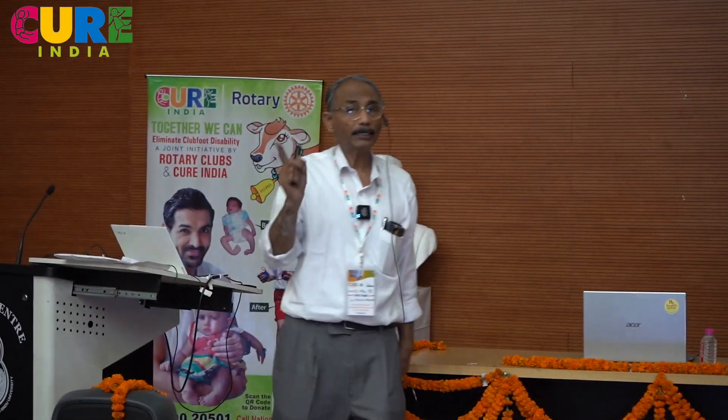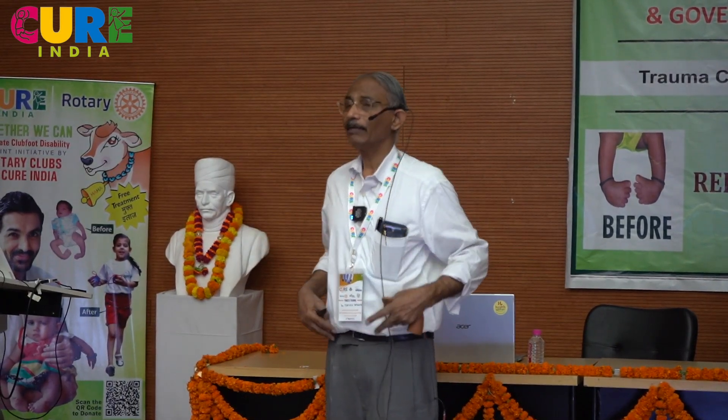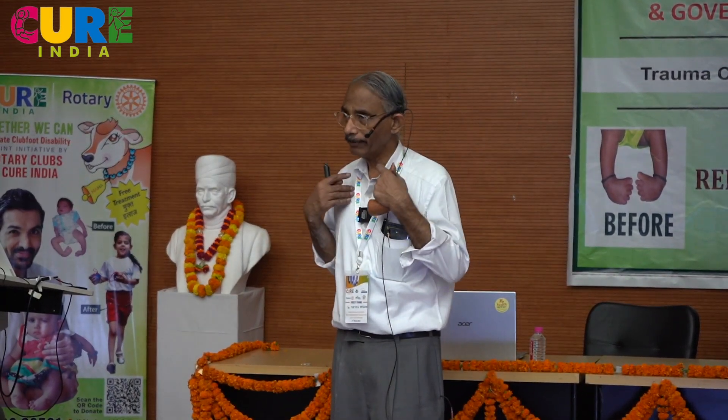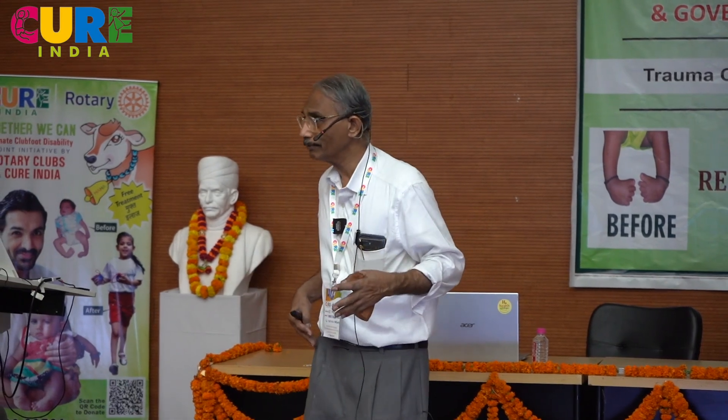Recurvatum in an arthrogrypotic is a challenge. Most of these children walk — they will walk with classically stiff hip, stiff knee, stiff ankle. They may have DDH associated. If it is bilateral, I tend to leave them alone. If it is unilateral, I definitely try to correct it to get both legs symmetrical and get them to walk.